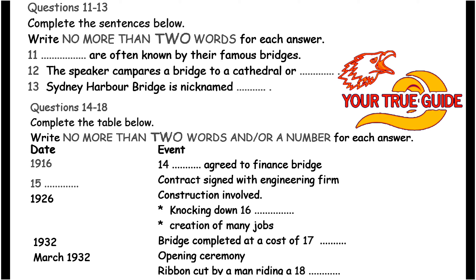Although the idea of building a crossing over Sydney Harbour had been discussed many years earlier, it wasn't until the year 1916 that the state government agreed to allocate some money for the construction of a bridge. The chief engineer for the bridge was a man called Dr John Bradfield, a brilliant engineer who supervised the entire project from beginning to end. First, they had to decide on a design, so he organised an international competition to choose a design, and ultimately got the one he wanted. The job went to a British engineering firm, and the contract was signed in 1924.